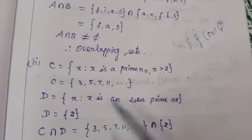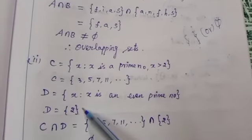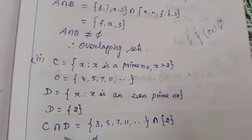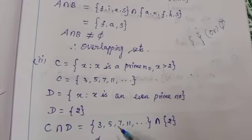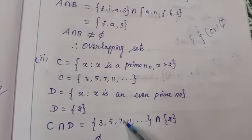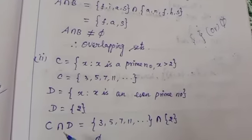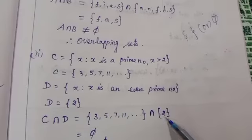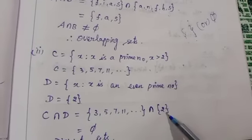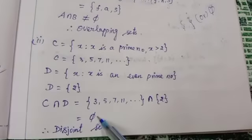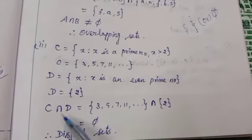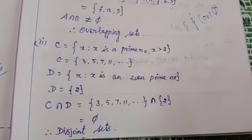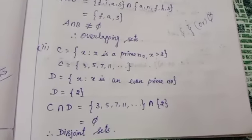Now find C intersection D. C elements are primes greater than 2 and D contains only 2. Check if these two have a common element — they do not. So C intersection D is equal to empty set. So these are disjoint sets.